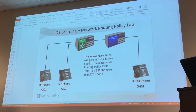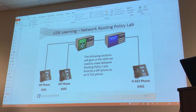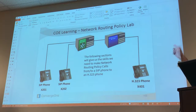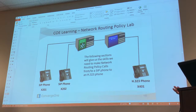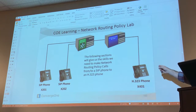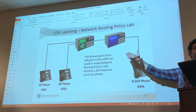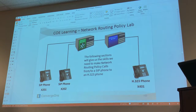We're going to start working with routing policies. Right now you have the two SIP phones being able to communicate using SIP registry routing. What we're going to do now is have an H.323 phone registered to CM and make calls from the SIP phone to the H.323 phone. That's going to happen via network routing policies because that phone doesn't have a user profile in Session Manager - instead it has a profile in CM.